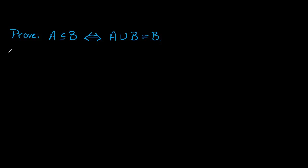In this video we will examine a proof involving a biconditional statement. Our task is to prove that A is a subset of B if and only if A union B equals B. Recall that when doing a proof of a biconditional we need to show the claim in both directions.